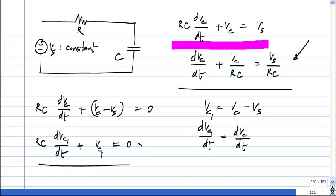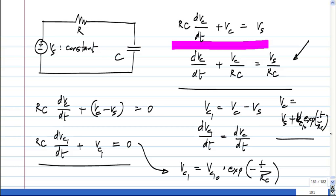So what is the solution to this? This we have already found. What is Vc1? Some constant times exponential minus t by RC. So this is just a change of variable to make the right hand side 0 and get a homogeneous differential equation again, and that tells you that for this Vc1 this is the solution. So what is the solution for Vc? It is Vs plus this Vc10 exponential minus t by RC. And then Vc10 has to be again found from initial conditions.